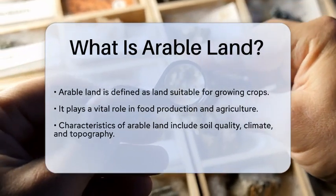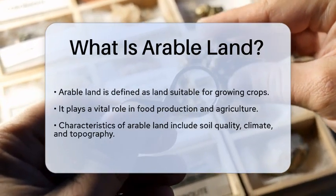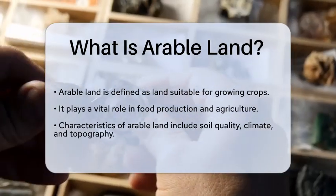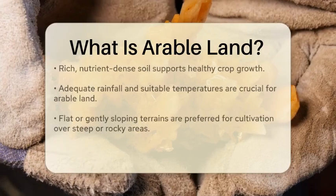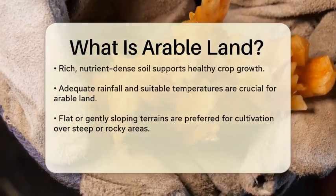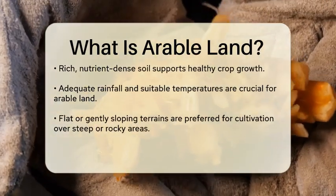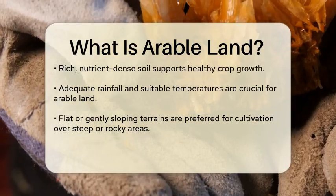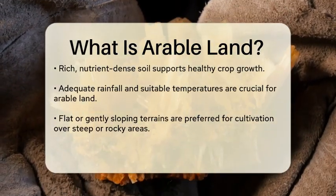Arable land refers to land that is suitable for growing crops. It is characterized by its ability to support the cultivation of various plants that provide food, fiber, and other essential materials. This type of land typically has a combination of favorable conditions, including soil quality, climate, and topography, which together create an environment conducive to agriculture.